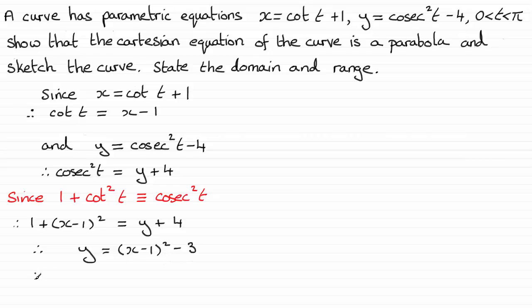Or I could just expand out. And I've got y equals x squared minus 2x and then plus 1 here, but minus another 3, that's going to be minus 2. And you can see I've got a parabola.